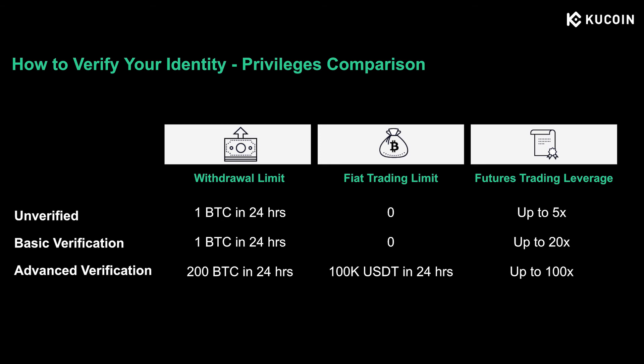For the withdrawal limit, KuCoin accounts with advanced KYC can withdraw up to 200 BTC in 24 hours, while unverified and basic level accounts will only have a one BTC limit — which is still higher than on most other platforms. For daily fiat trading, only those with advanced KYC have access to fiat trading services on KuCoin, with a daily limit of 100k USDT. As for leverages on futures trading, unverified users can only use up to 5x leverage, while basic and advanced KYC accounts can use up to 20x and 100x respectively.